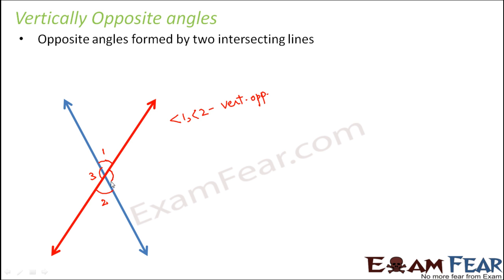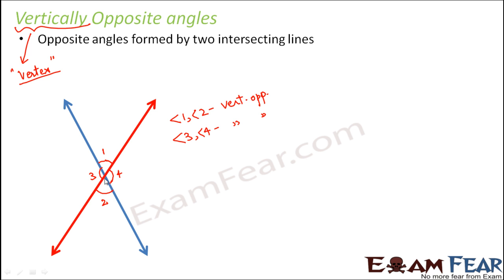Similarly, if you call this angle 3 and this angle 4, then angle 3 and angle 4 are also vertically opposite angles because they are located exactly opposite to each other. Now, why do we call them vertically opposite angles? It has not been derived from the word 'vertical' — instead, it has been derived from the word 'vertex,' because these angles share the same vertex. Angle 1 and angle 2 share the same vertex and are located opposite to each other, and so do angle 3 and angle 4.